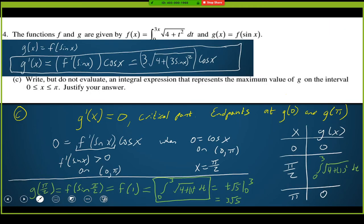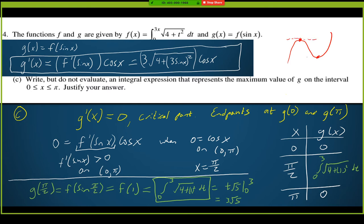For part c, copying g prime again. I want to write an integral expression representing the maximum of g on the interval from 0 to pi. To get a maximum or minimum, we derive, set the derivative equal to 0, and solve for critical points. However, critical points only give relative extrema — the absolute maximum could also be at the start or end point of the interval where the slope isn't 0. So I need to test the start point, end point, and any points where the slope is 0.